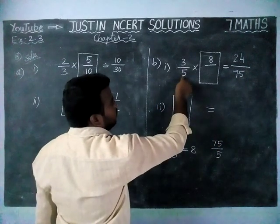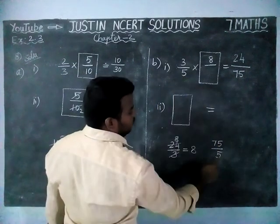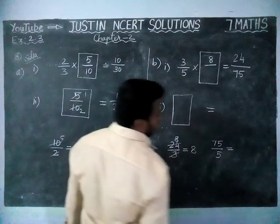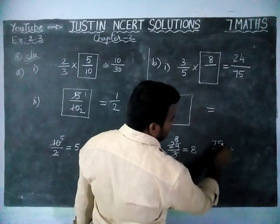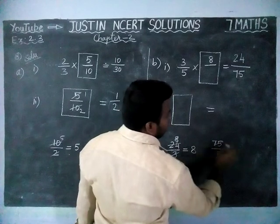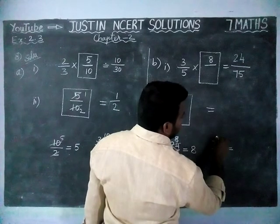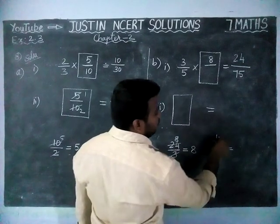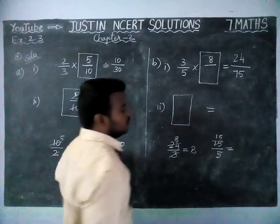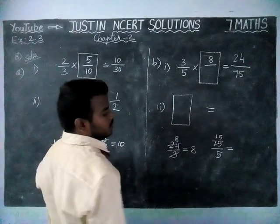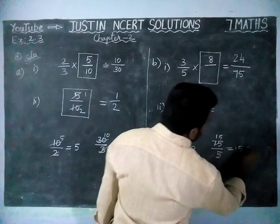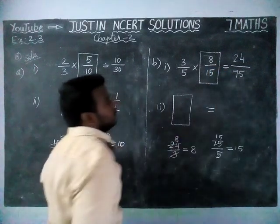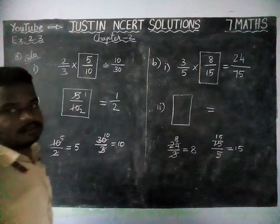Next, we have to divide 75 by 5. 75 is the answer denominator, and the given number is 5, so we are dividing by 5. In 75, we have 1 five, remaining 25; in 25, 5 fives are there. So, 15 is the answer. In denominator, we are getting 15.